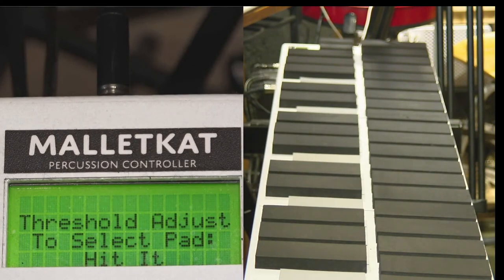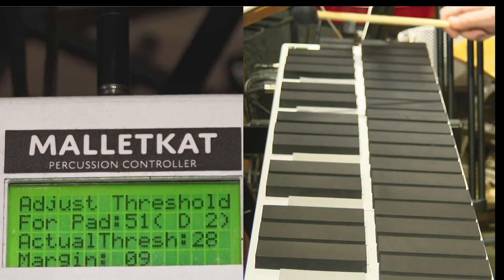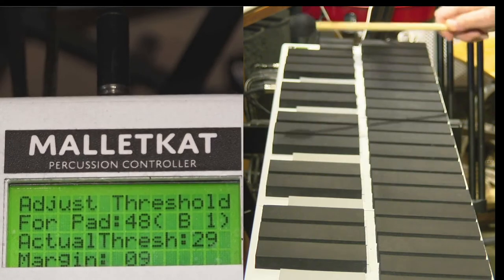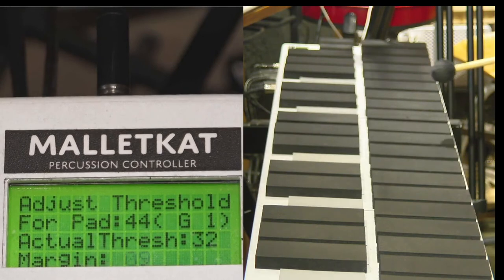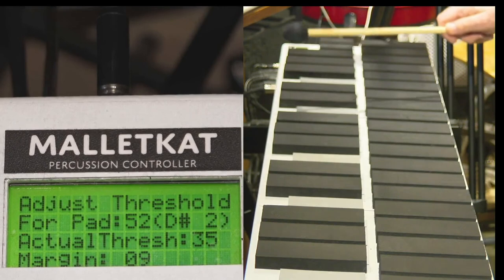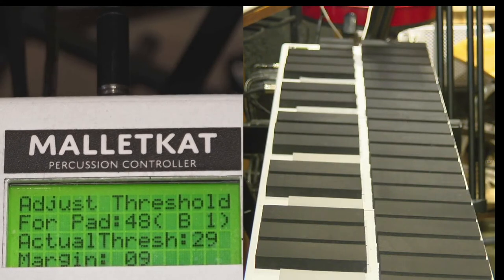It says threshold adjust. You can hit any pad, and it will show you the actual threshold and the margin. As you can see, it's normal to have little variations from pad to pad.